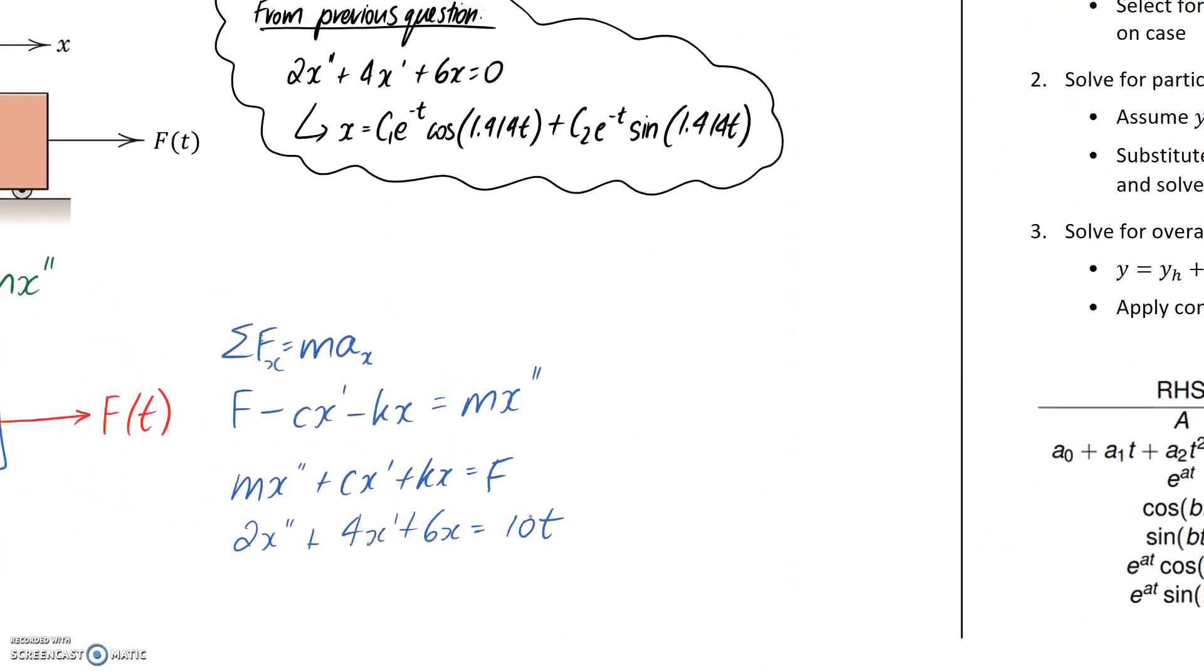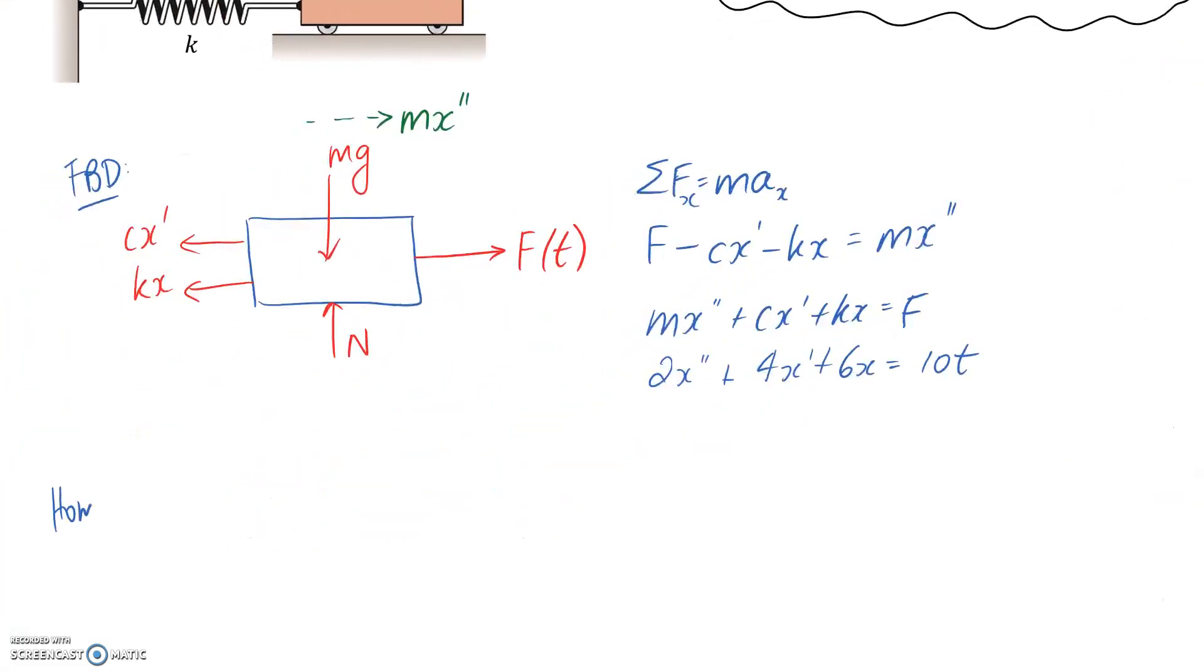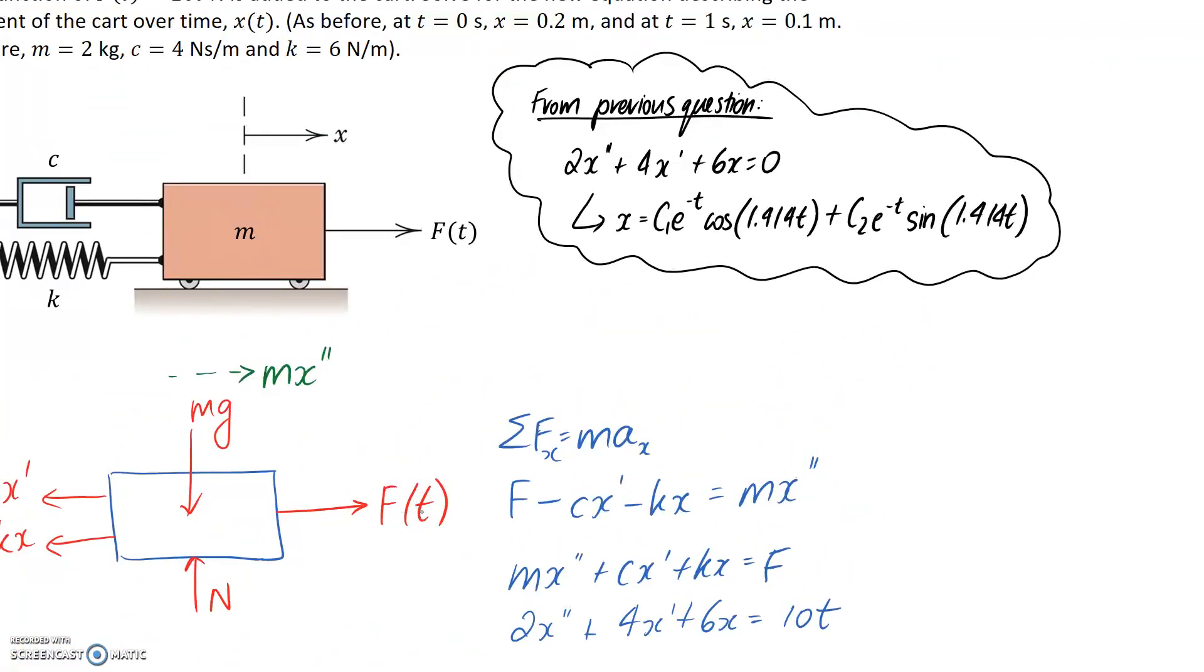The first step is to solve for the homogeneous solution. What we can see here is that this time, compared to the last one, we don't have a homogeneous equation because the right hand side here is not equal to zero. So in order to find the homogeneous solution, all we do is set it equal to zero. So rewriting our equation, we get that the right hand side is equal to zero. And what we're going to find is that this equation we already solved in the previous video, because we had a homogeneous system, we didn't have this f of t.